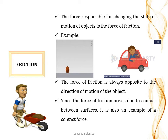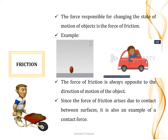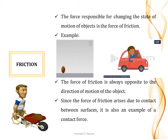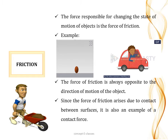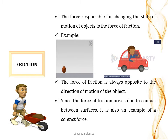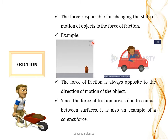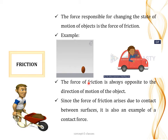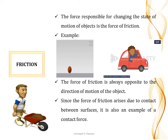The next contact force is friction. Consider a ball rolling on the ground — it gradually slows down and comes to rest even though no visible force acts on it. This is due to friction, which opposes the motion of the ball. Similarly, a car or scooter comes to rest when its engine is switched off, also due to friction. The force of friction is always opposite to the direction of motion, and since it arises due to contact between surfaces, it is an example of contact force.